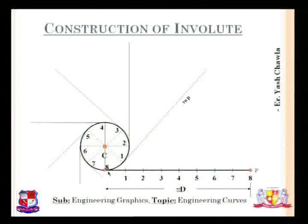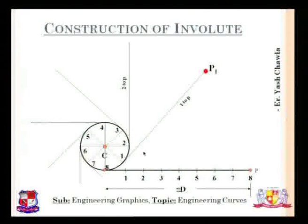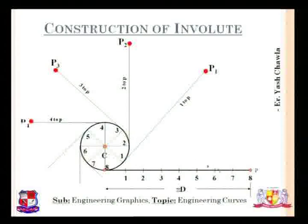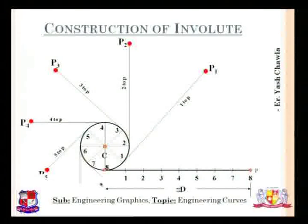From point 1 to P, we take the distance and cut an arc. From point 2 to P, we take the distance and cut an arc on the tangent passing through 2. From 3 to P, take center as 3 and cut an arc on the tangent passing through 3. From 4 to P, the point comes, then 5 to P, 6 to P, 7 to P, and point 8 will be on the circle.